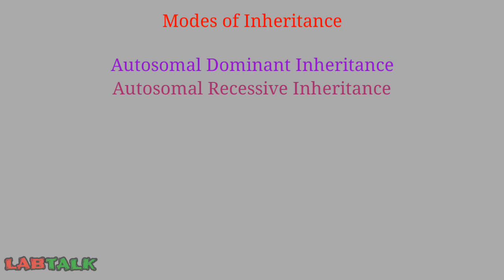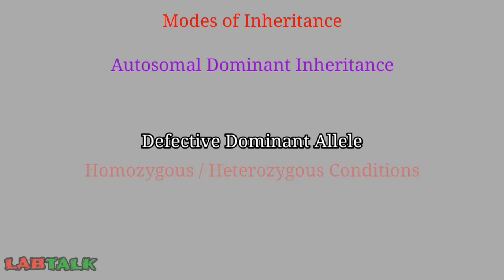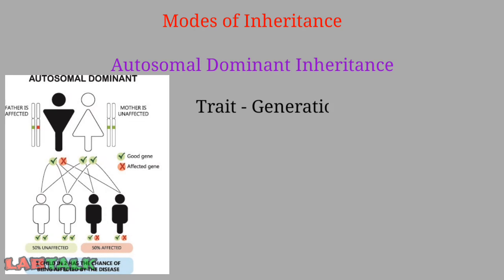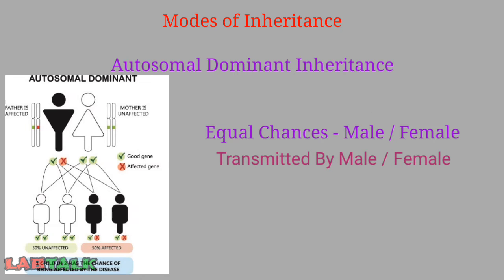In autosomal dominant inheritance, the dominant allele is defective while the recessive allele is normal. Individuals affected by autosomal dominant diseases carry the dominant allele in either homozygous or heterozygous condition, whereas unaffected individuals carry the recessive allele in homozygous condition only. Key features: the trait does not skip any generation; there are equal chances for both male and female children to be affected; and the trait is transmitted by either sex.